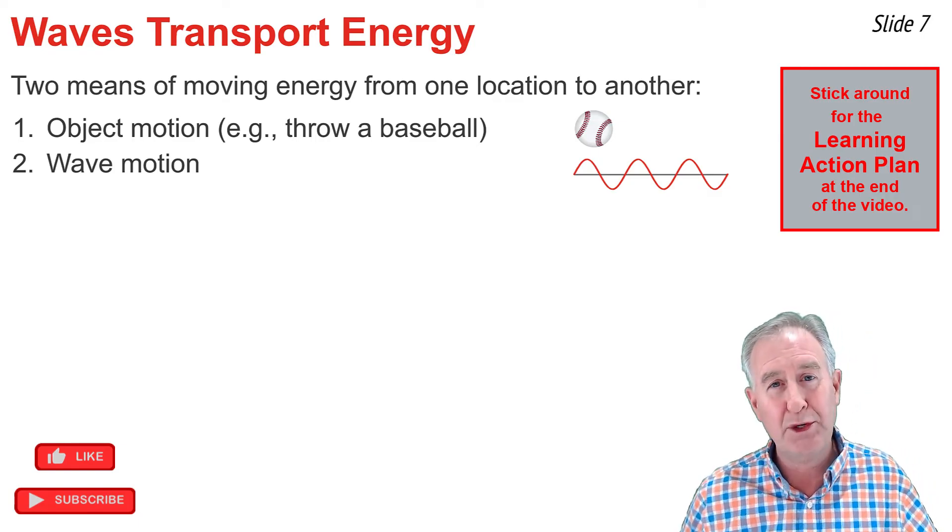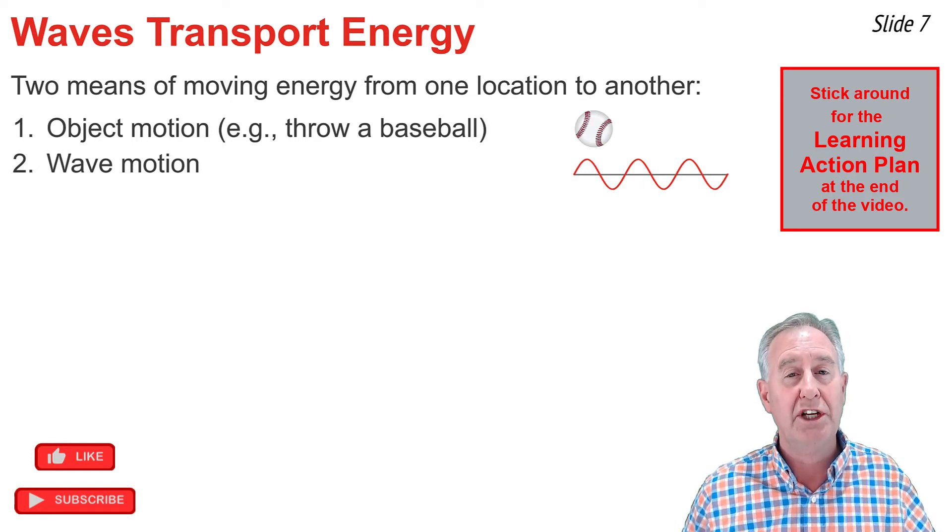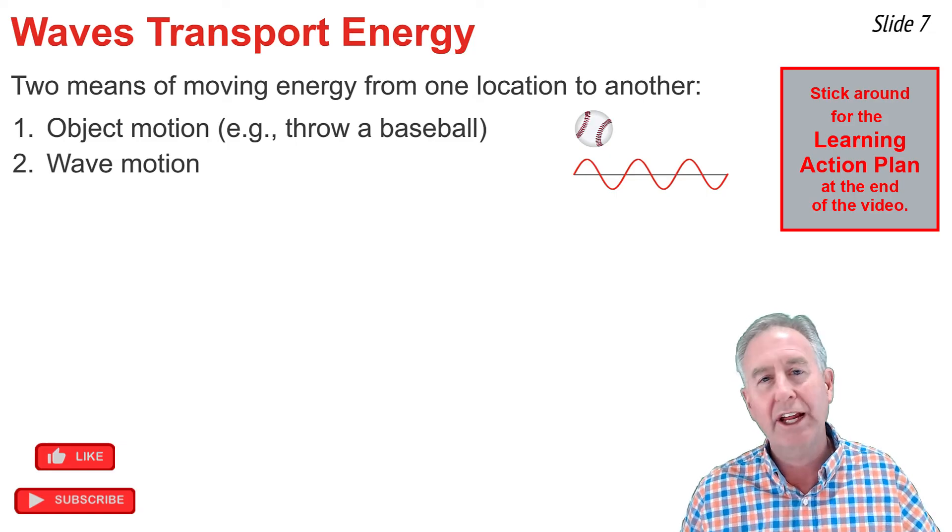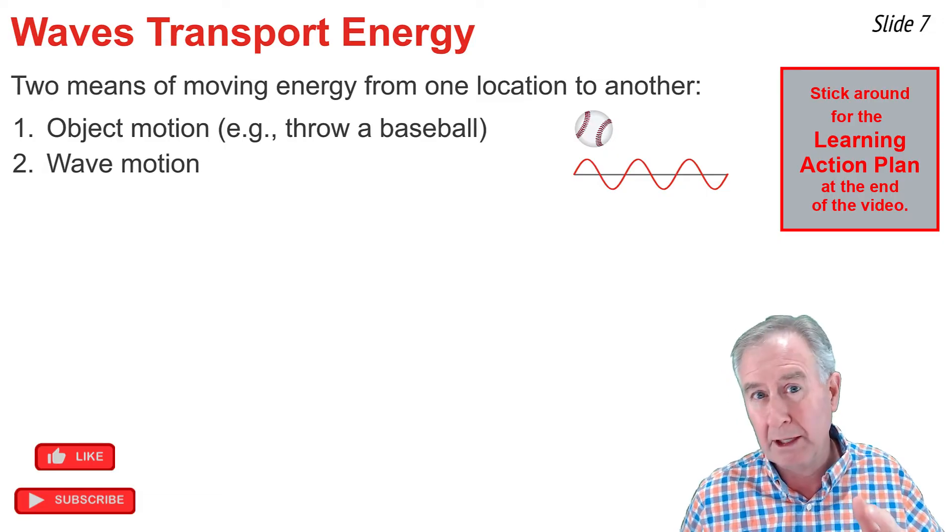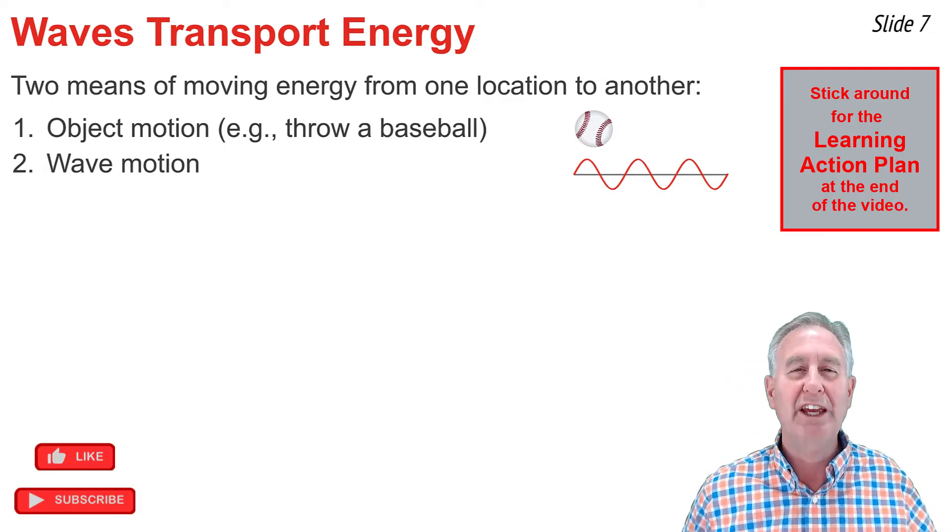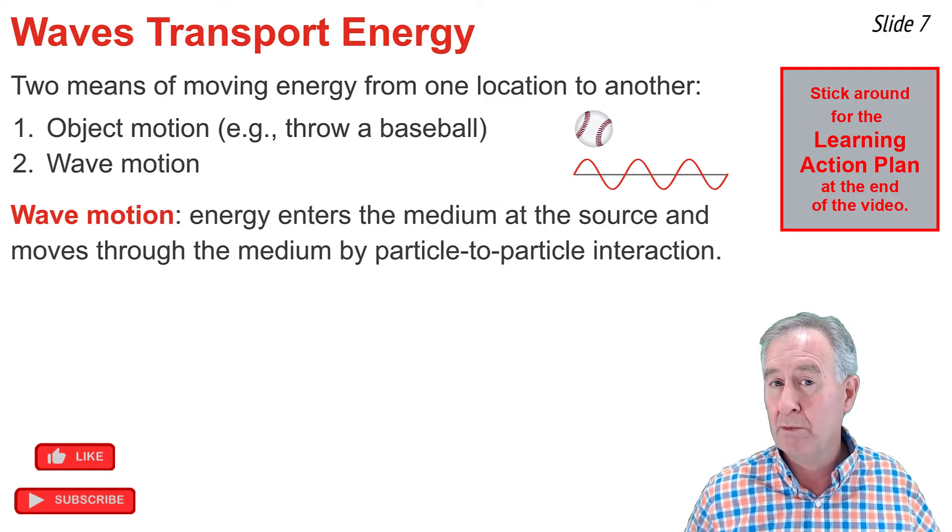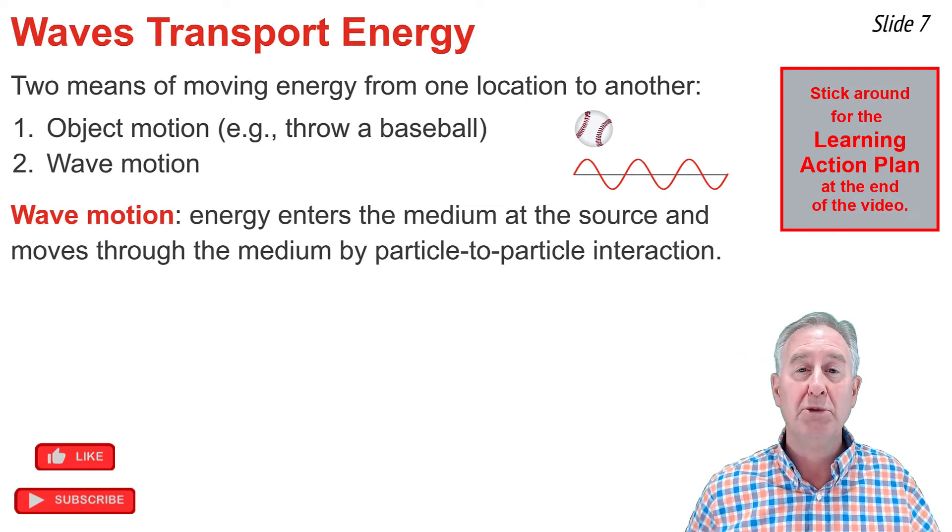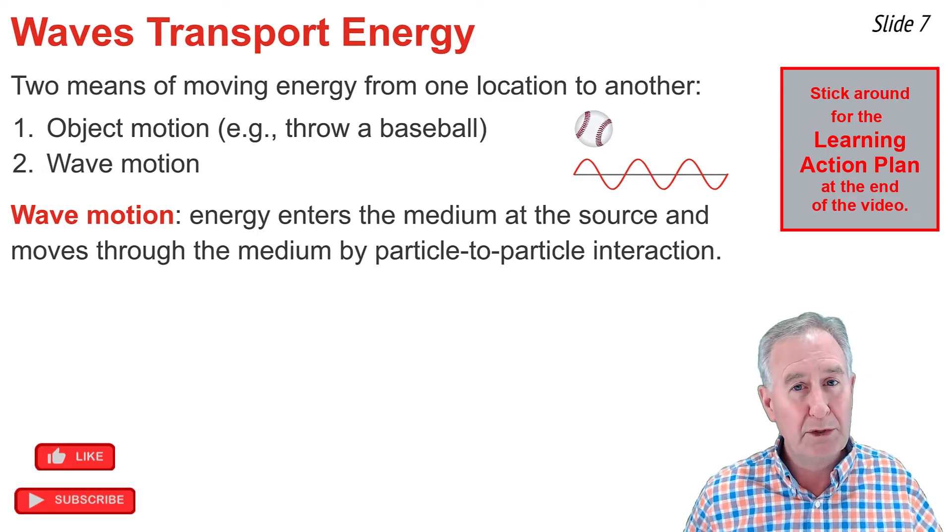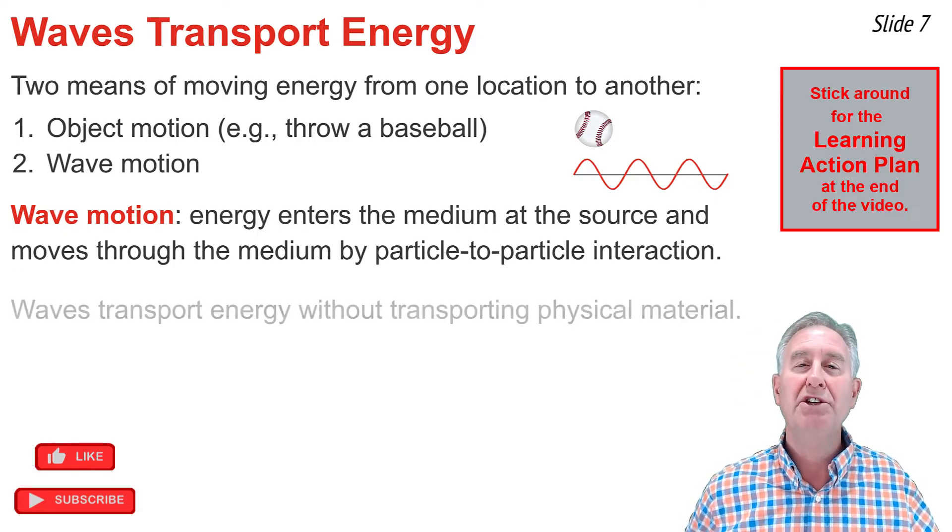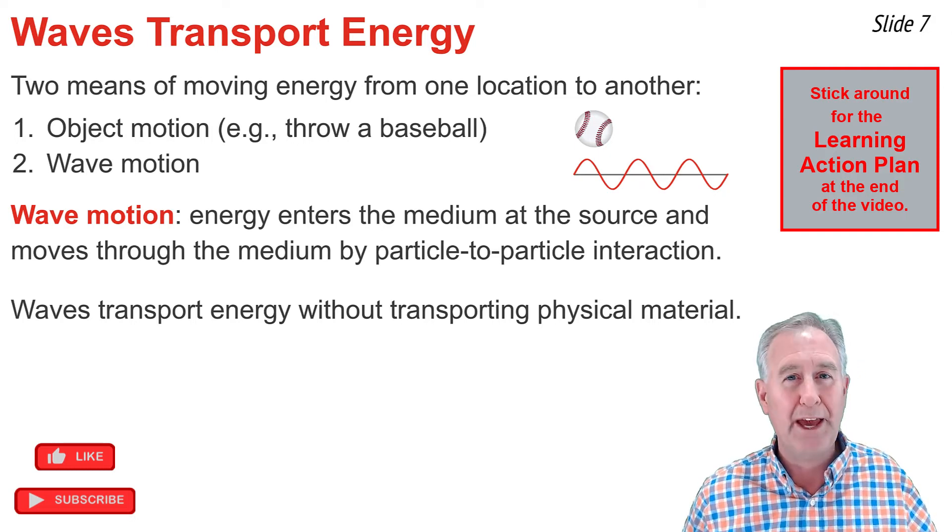The first is by means of object motion. For instance, you take a baseball and you do some work on it and you give it some kinetic energy. The baseball moves through the air and carries energy with it. If I were to stand on the opposite end and the baseball were to hit me in the cheek, I would surely know that it was carrying energy with it. But the other means to move energy from one location to another is by means of wave motion. Energy is transported through the medium by particle-to-particle interaction, from the source to other locations in the medium. This is unique in that energy is transported without the actual movement of physical matter.